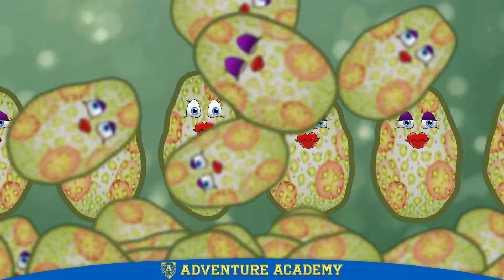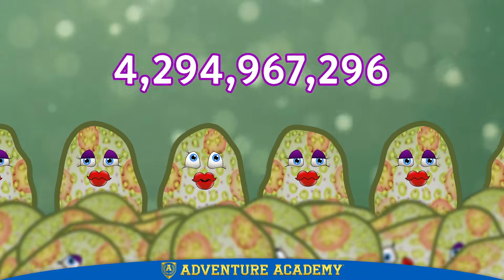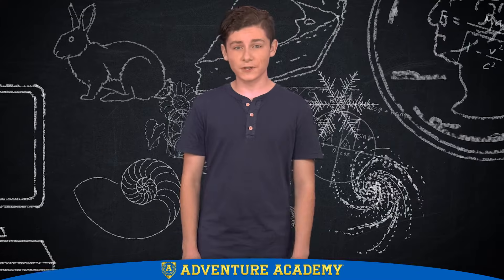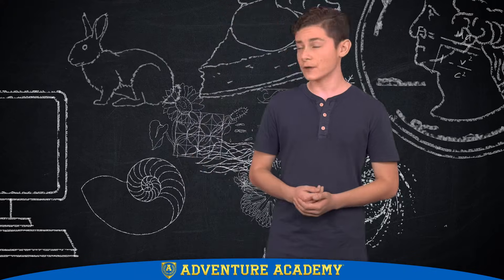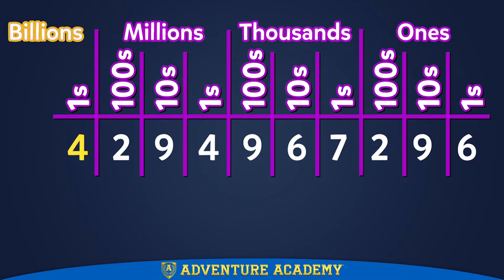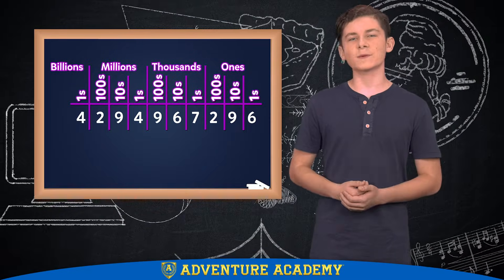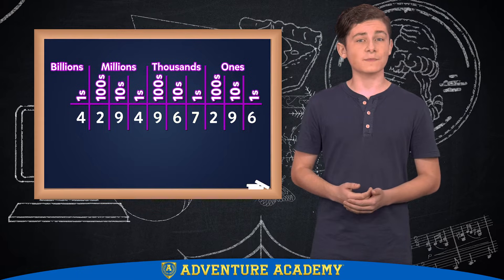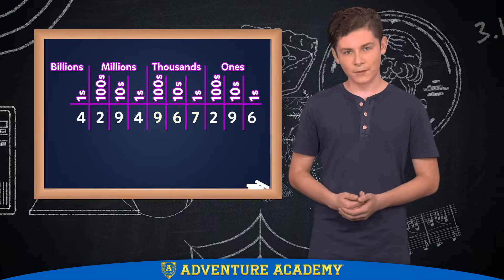Until — just guess how many bacteria there would be after eight hours. That many? Fortunately, it's easy to read and say large numbers like that if you use a place value chart, like this one. So that's 4,294,967,296 bacteria. Wow. There probably won't be exactly that number of bacteria, just about that number. A lot of times, scientists will round off a number with zeros because they don't know and they don't need to know the exact number.